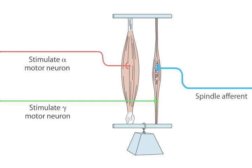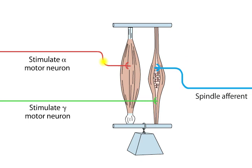When the muscle shortens, the spindle is relieved of tension, or unloaded, and the sensory axons that innervate the spindle might therefore be expected to stop reporting information about muscle length. However, gamma motor neurons become activated at the same time. These neurons terminate on the contractile poles of the intrafusal fibers, causing them to contract, thereby maintaining the tension on the central region of the intrafusal fibers where the sensory axons terminate. Thus, co-activation of the alpha and gamma motor neurons allows spindles to function at all muscle lengths during movements and postural adjustments.